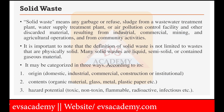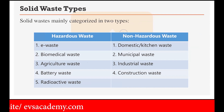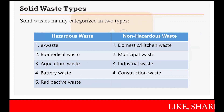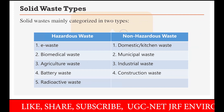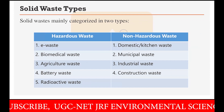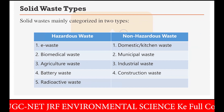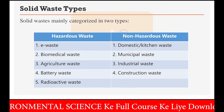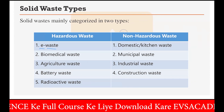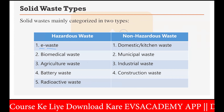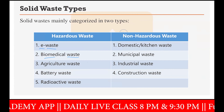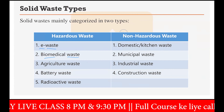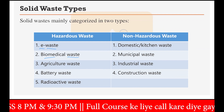The first thing we have to discuss in solid waste is the types of solid waste. Solid waste is mainly categorized into two types: hazardous waste and non-hazardous waste. The handling of hazardous waste is a little different compared to non-hazardous waste. In hazardous waste, we have e-waste (electronic waste coming from multiple electronic equipment), biomedical waste (coming from laboratories and hospitals), and agricultural waste coming from agricultural operations.